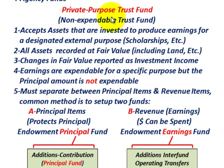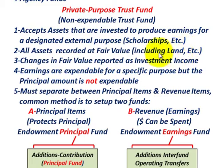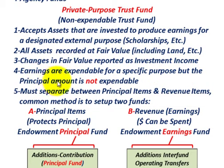Looking at the characteristics of a private purpose trust fund: first, it accepts assets that are invested to produce earnings for a designated external purpose, like scholarships. Second, all assets received or purchased are recorded at their fair value, including land and buildings. Third, changes in the fair value of these assets are reported as investment income. Fourth, earnings are expendable for the specific purpose, but the principal amount is not expendable.